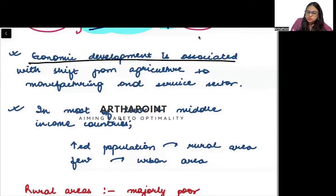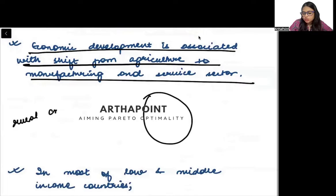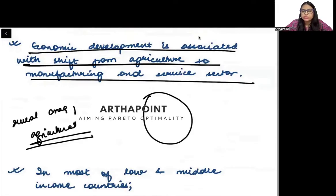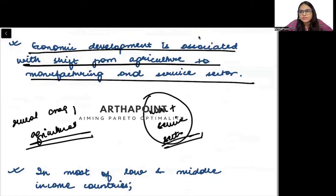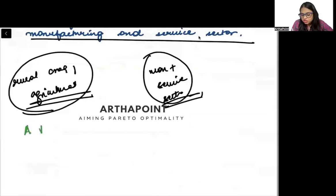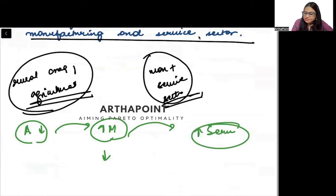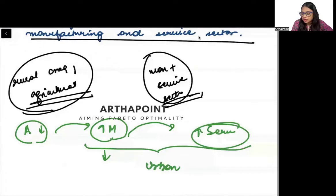Economic development is associated with a shift from agriculture to manufacturing to service. This is a very important point. The rural area corresponds to the agricultural sector, while the urban area corresponds to the manufacturing and service sectors. As a country progresses, the role of the agricultural sector falls and more manufacturing takes over. Then the role of manufacturing falls and there is more service sector. So you go from agriculture to manufacturing to service, with manufacturing and service happening in the urban area and agriculture in the rural area.